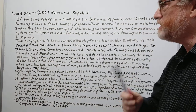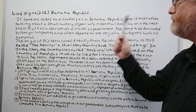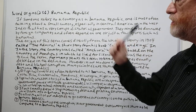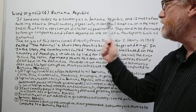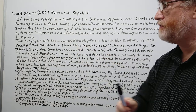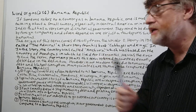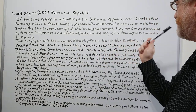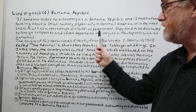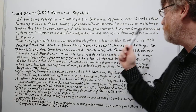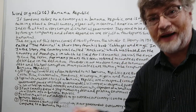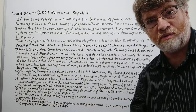If someone refers to a country as a banana republic, one is most often talking about a small country, especially in Central America or in the West Indies, that has a very corrupt, dictatorial government. They tend to be dominated by foreign companies and often depend on one or just a few exports such as bananas. That's why it's called a banana republic.